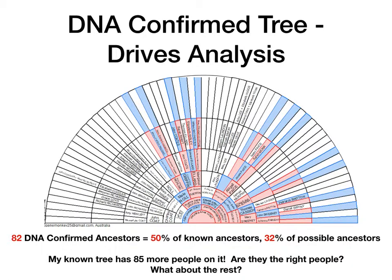The primary reason we're all doing this is to build our pedigrees, and I want a complete one that's right. That's driving my analysis. When I look at what I've DNA confirmed, it's only 82 so far out of 254, so there's lots to go. I like to use this X inheritance chart when I'm thinking about where I need to focus next, to remind me when the X chromosome is relevant. It's important to work backwards in time, just like with traditional research.